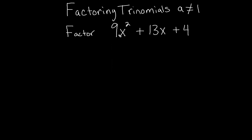So the first thing that we're going to do is take this a term. We're going to multiply it by the c term. So we're just going to slide it back here and multiply 9 times 4. We're going to rewrite our expression as x squared plus 13x plus 36.